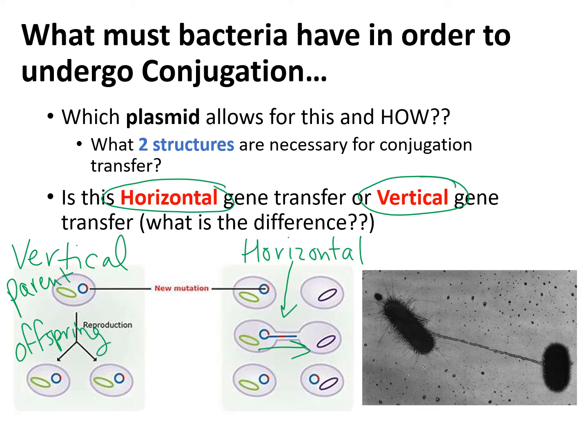For example, mom and dad passing on genes to a baby — that's vertical gene transfer. I like students to picture a pregnant woman standing straight up and the baby plopping vertically right out of her, falling downward. Versus horizontal — if you've ever heard 'horizontal mambo' or ways people refer to sexual activity — horizontal gene transfer is through sexual contact, or any transfer of genes from two unrelated organisms.